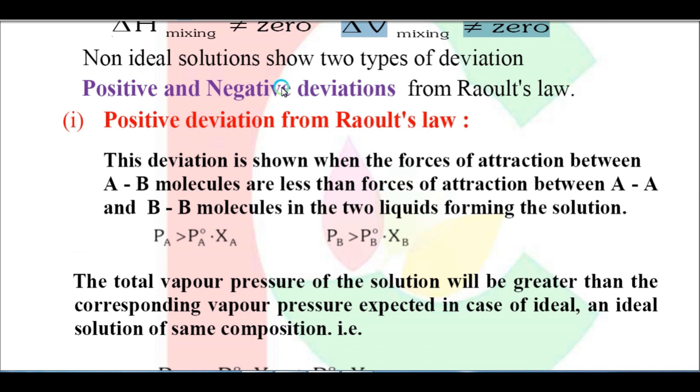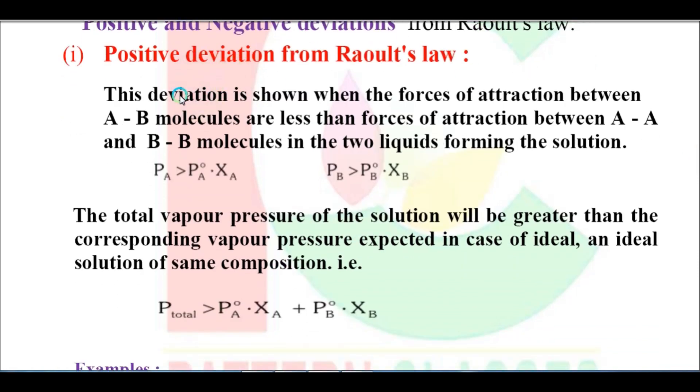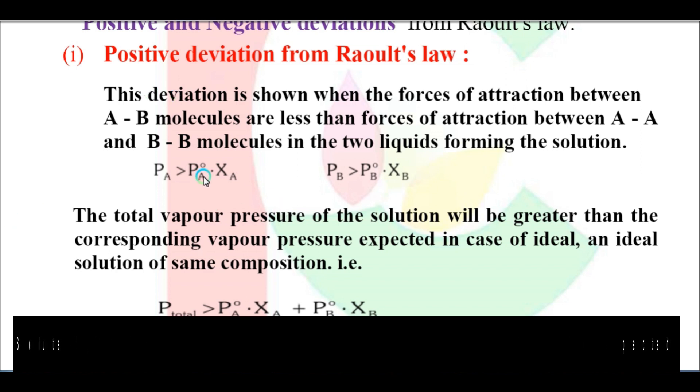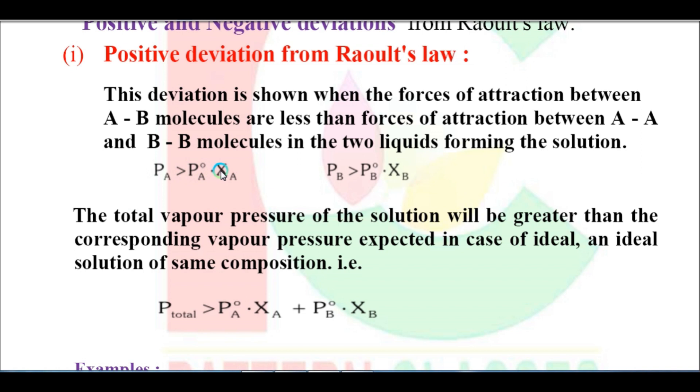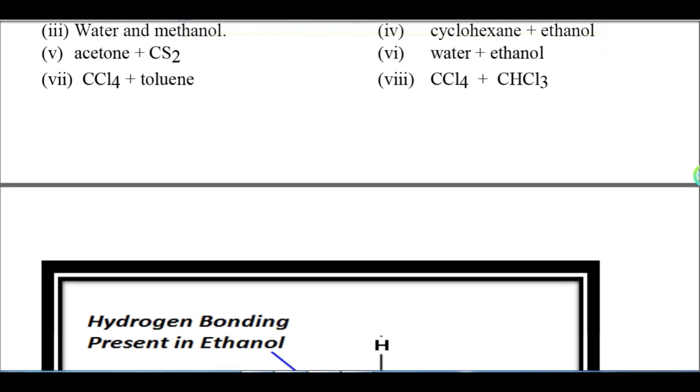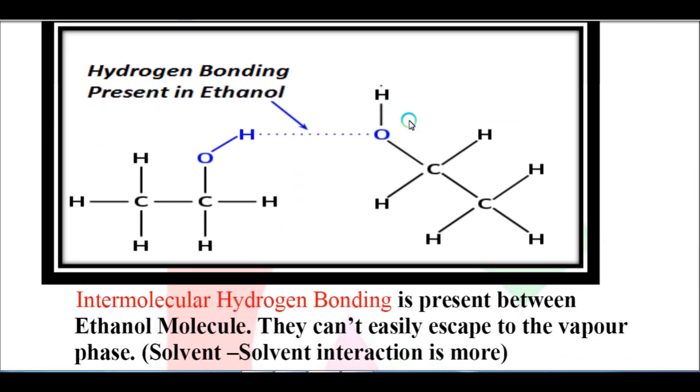What is positive deviation? In positive deviation, the original interaction between solute-solute or solvent-solvent is much stronger than the interaction between solute-solvent after mixing. Because of this, the partial pressure and mole fraction become larger than expected. Let me take an example: ethanol and acetone. First point - ethanol molecules have hydrogen bonding between them. Due to hydrogen bonding, ethanol molecules stick together, so vapor pressure is low.